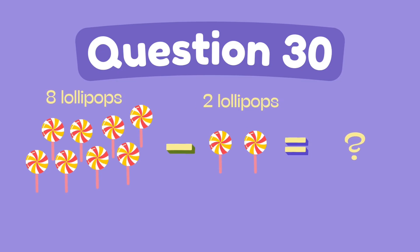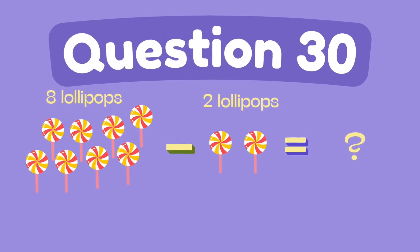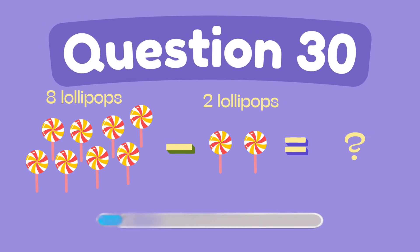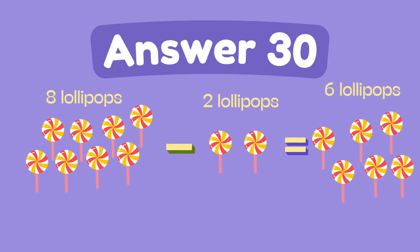What is eight minus two? What is nine minus two? The answer is six.